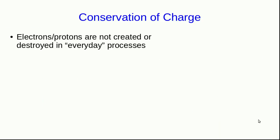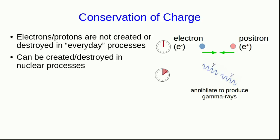In those everyday processes like rubbing things together and transferring charge from a charged object to a neutral one, electrons and protons are never created or destroyed. However, electrons and protons can be created and destroyed in nuclear processes. Is charge still conserved when this happens? Well, here's an example.